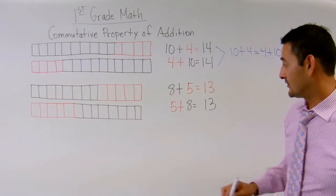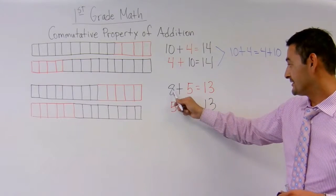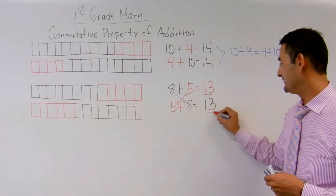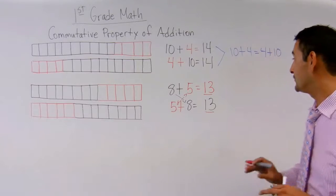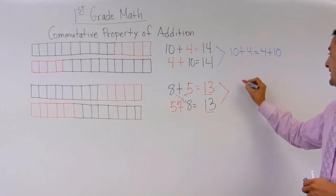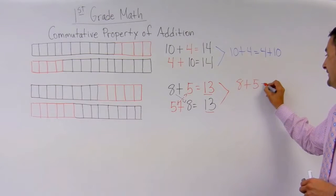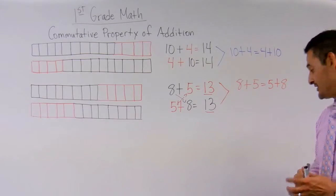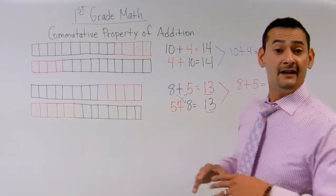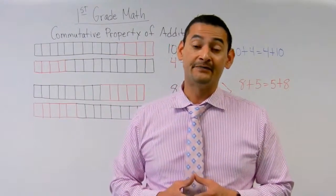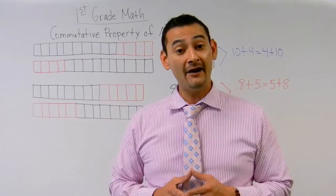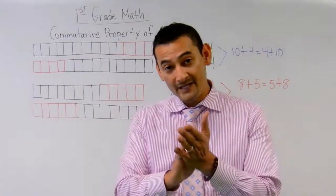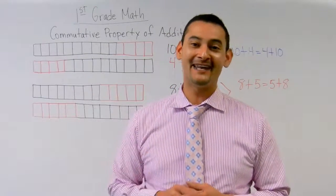So here we go again, boys and girls. Look — if I just switch the numbers, one going this way and the other going this way, we still get the same number. And that's the commutative property. So this means eight plus five equals five plus eight. And that's pretty much it, boys and girls. Was that pretty easy or what? Of course it was easy because you're so smart. I want to thank you and your parents again for watching this video. Children, you're doing an outstanding job. So until the next time, we'll see you at the next video.